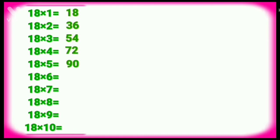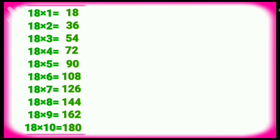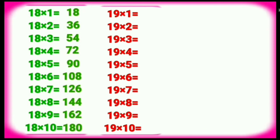Eighteen sixes are one zero eight. Eighteen sevens are one twenty-six. Eighteen eights are one forty-four. Eighteen nines are one sixty-four. Eighteen tens are one hundred eighty. Table of Nineteen. Nineteen ones are nineteen. Nineteen twos are thirty-eight.